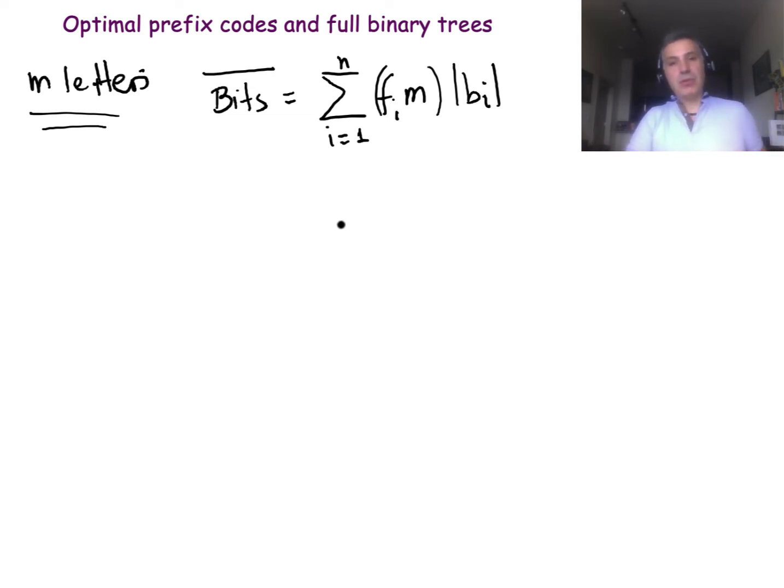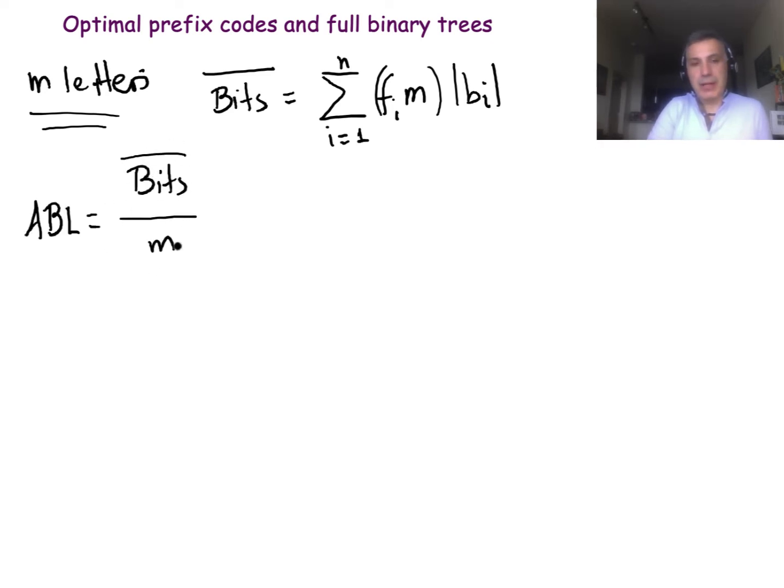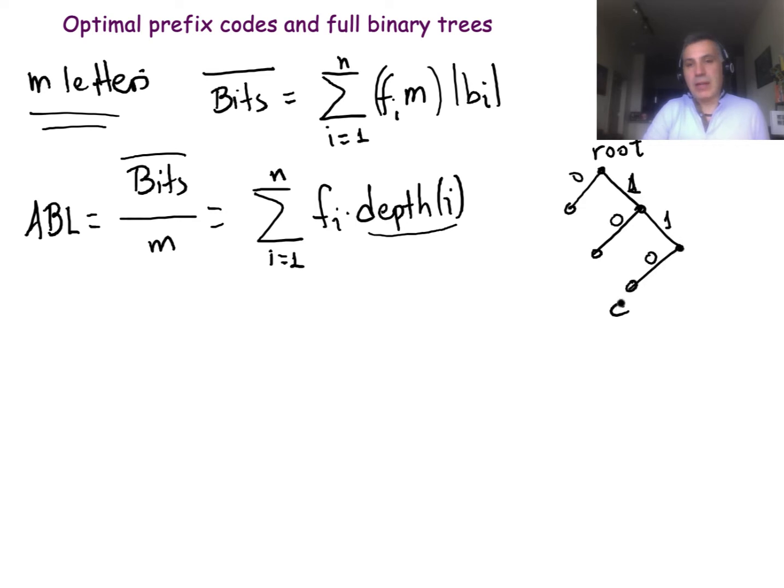Now there are two things I want you to notice here. The first is simple, that if we divide both sides of this equation by m, the average number of bits that we need per letter is the frequency of symbol i times the depth of that symbol in the binary tree. Why is this the case? Imagine that this is my binary tree for representing the codewords. The codeword length for this letter is the depth of that letter in the tree. This is why I replaced here the length of the codeword with the depth of the corresponding letter in the binary tree.